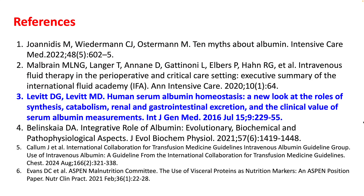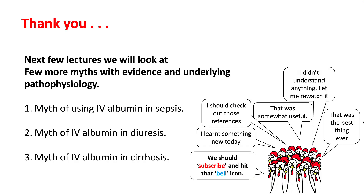These are the references. I think you should read the paper by Levitt et al. — it is possibly one of the best papers I've read on the clinical value of serum albumin measurements. In the next few lectures, we'll look at a few more myths, evidence, and underlying pathophysiology when discussing the role of albumin in sepsis, diuretics, and cirrhosis. Thank you.